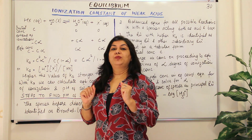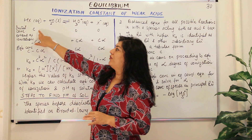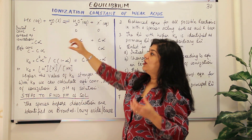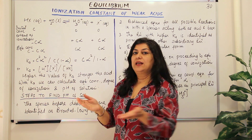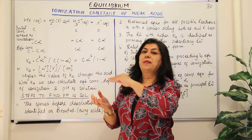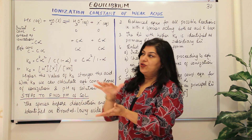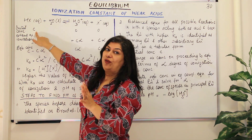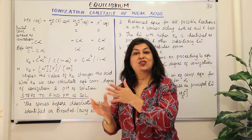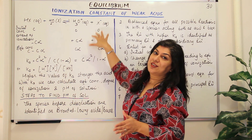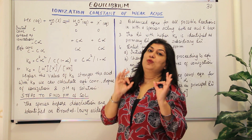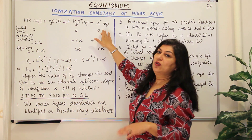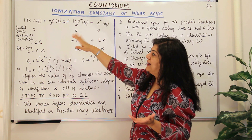Let us assume that initially we started with a concentration C of the acid — that is, we added that amount of acid to make one liter of solution in water. Initially we only had concentration C of the acid, and since the reaction has not yet started, the concentration of the products was zero: zero hydronium ion concentration and zero of whatever the negative ion is.